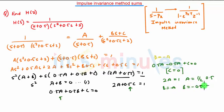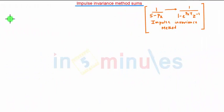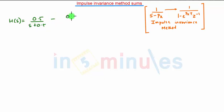So we have solved the first part — the partial fraction expansion. Using these values we write H(s) = 0.5 / (s + 0.5) − 0.5s / (s² + 0.5s + 2).